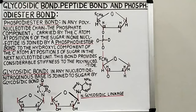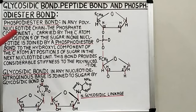Students, we know that each nucleotide consists of 3 components: phosphate, a 5-carbon deoxyribose sugar, and 1 nitrogenous base.